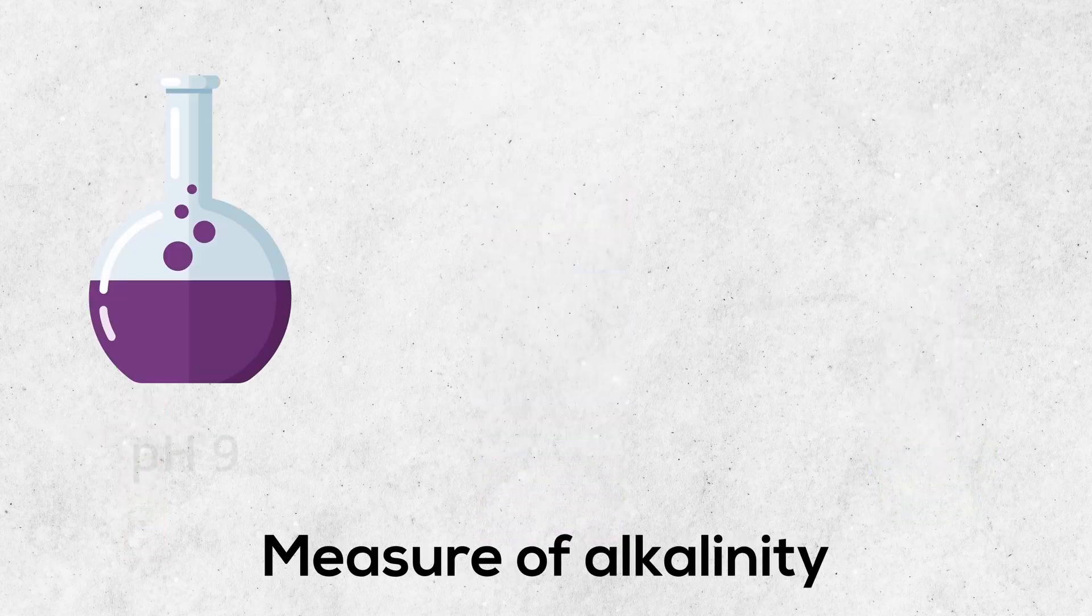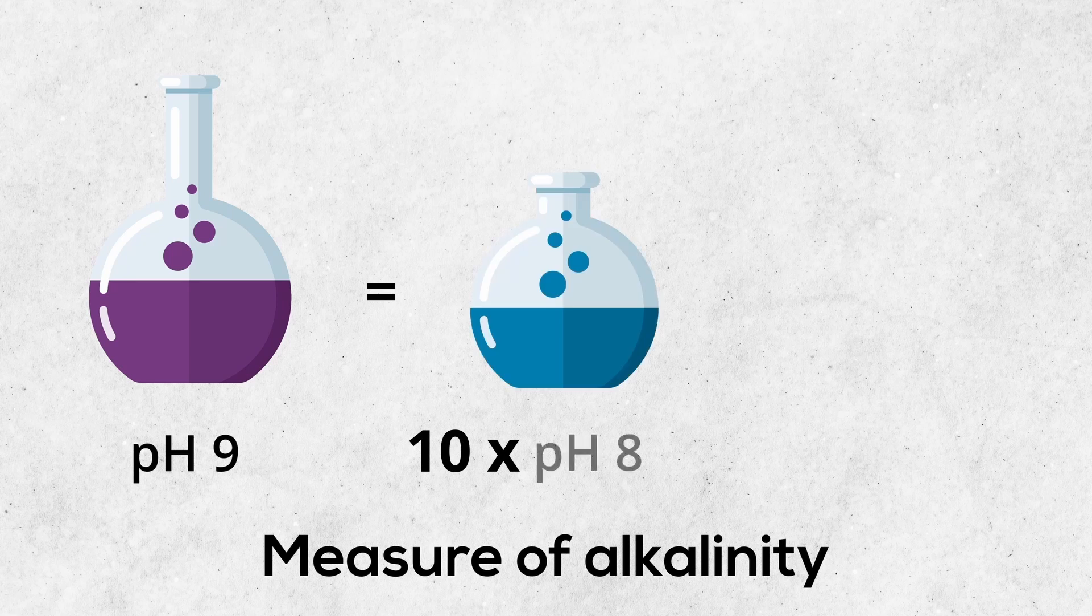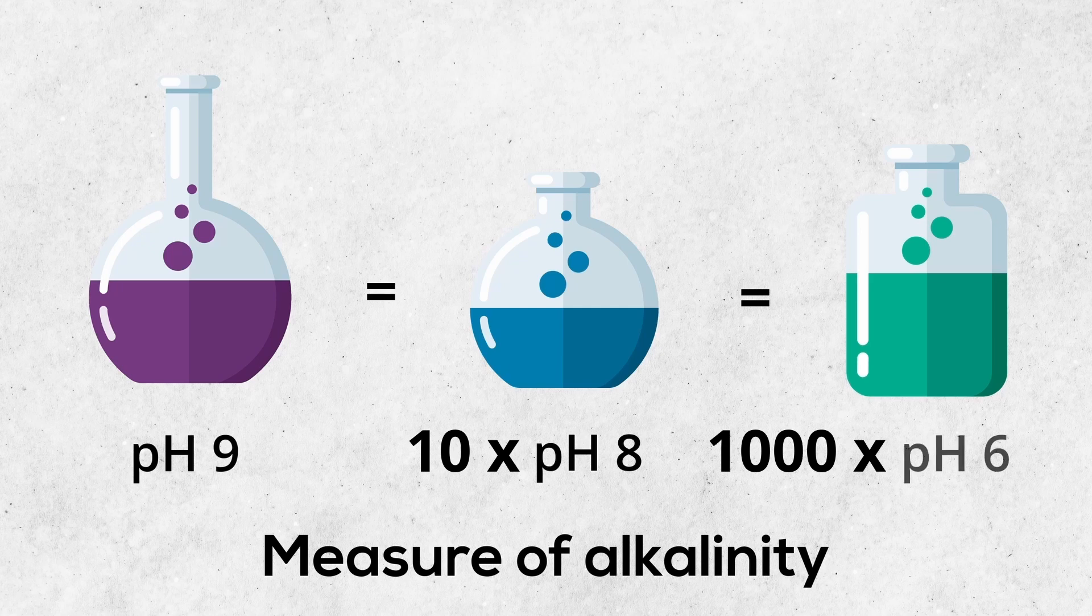Similarly, a substance with a pH of 9 is 10 times more alkaline than a substance with a pH of 8, and 1000 times more alkaline than a substance with a pH of 6.